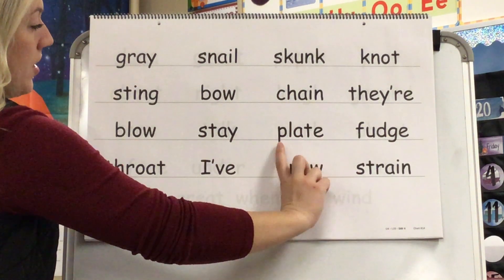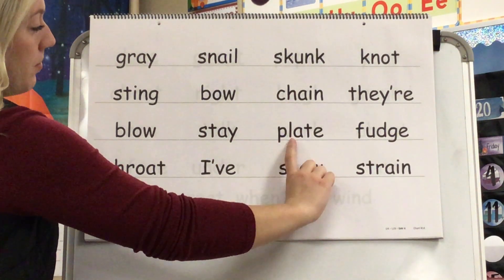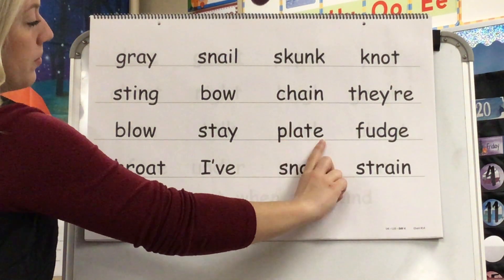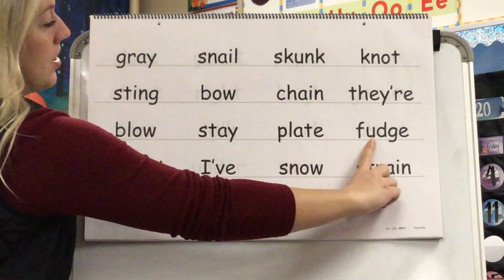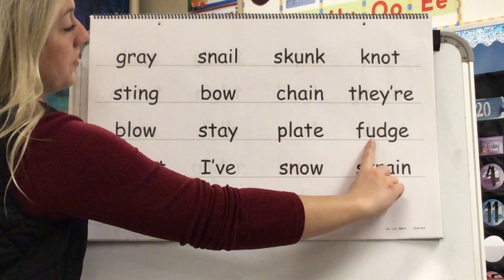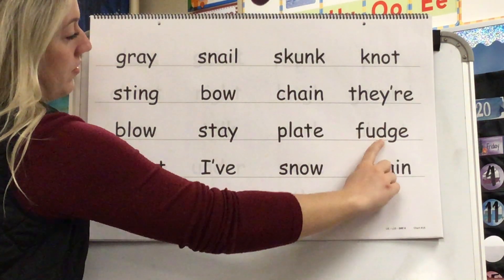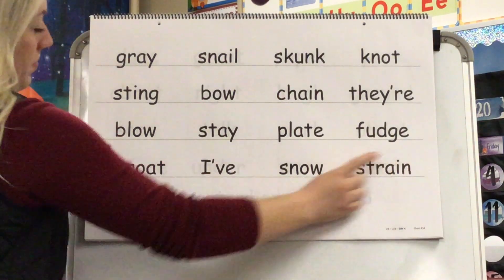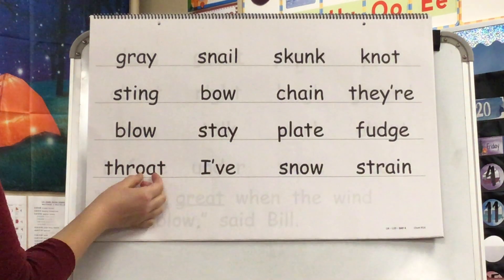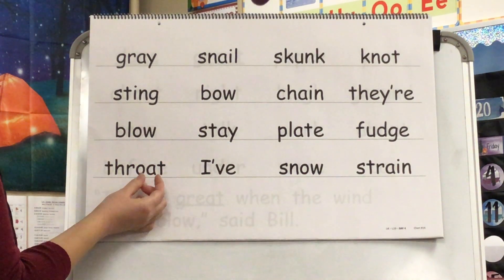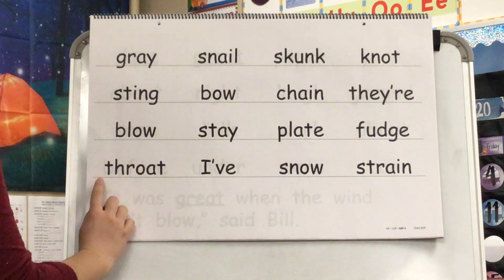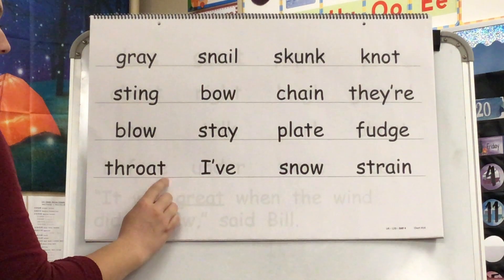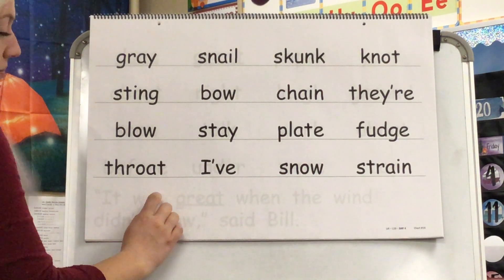Sound? A. Blend? Pl-ate. Word? Plate. Sound? A. Blend? F-a-j. Word? F-a-j. Sound? O. Blend? Th-r-o-t. Word? Throat.